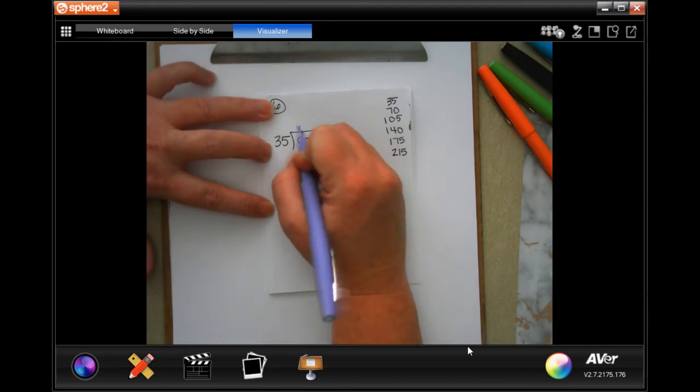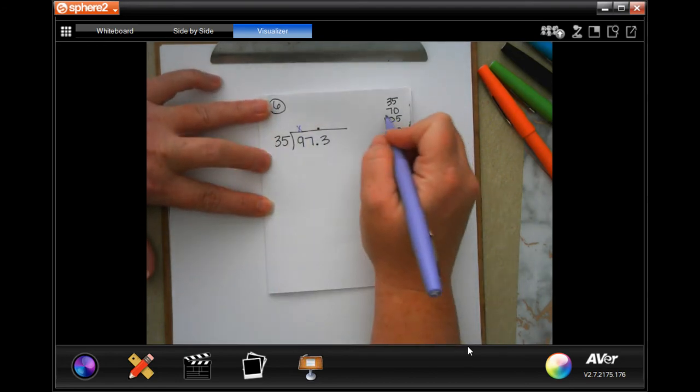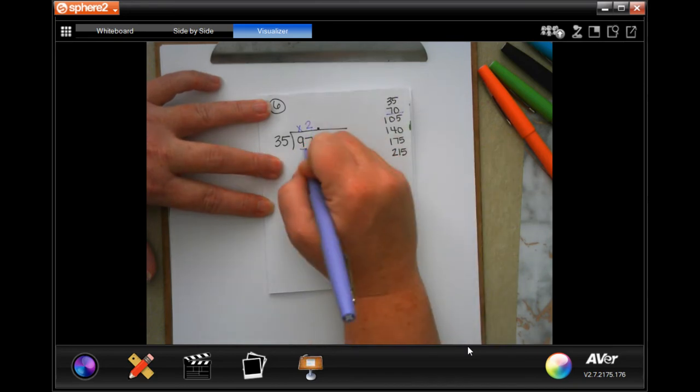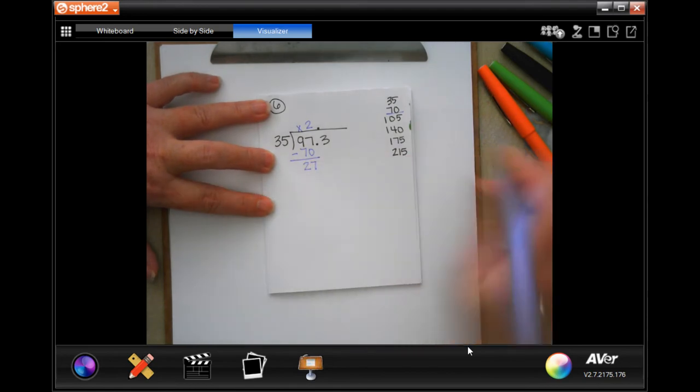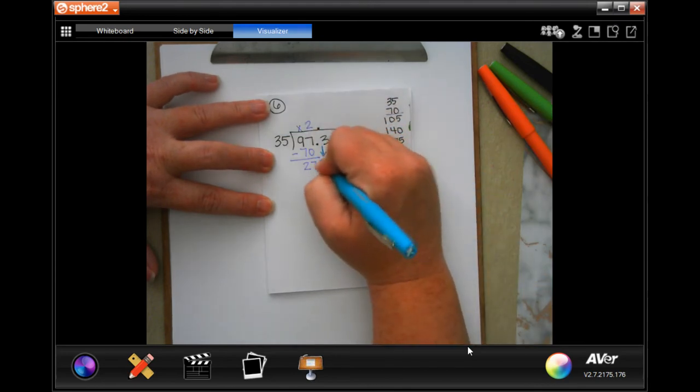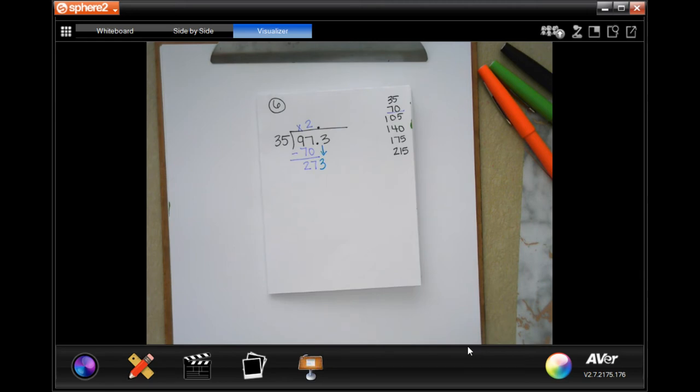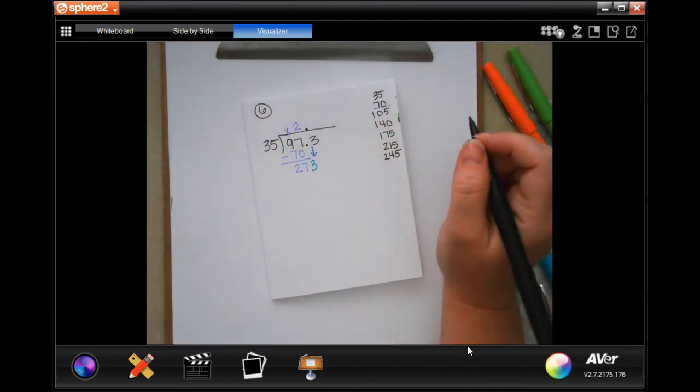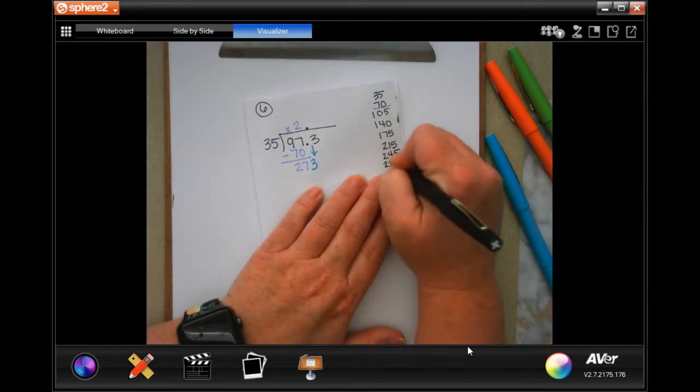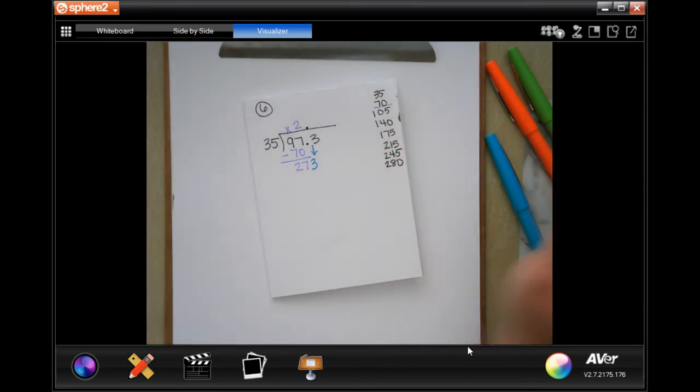35 is definitely not going to go into nine. 35 will go into 97. It looks like the most I'm going to get is two times, which is 70. Subtract. And I'm going to get 27. Now, 27 is smaller than 35. So I can bring down that three. And it looks like I'm going to have to do some more. 35 times seven is 245. And if I add 35 to that, then I get 280.